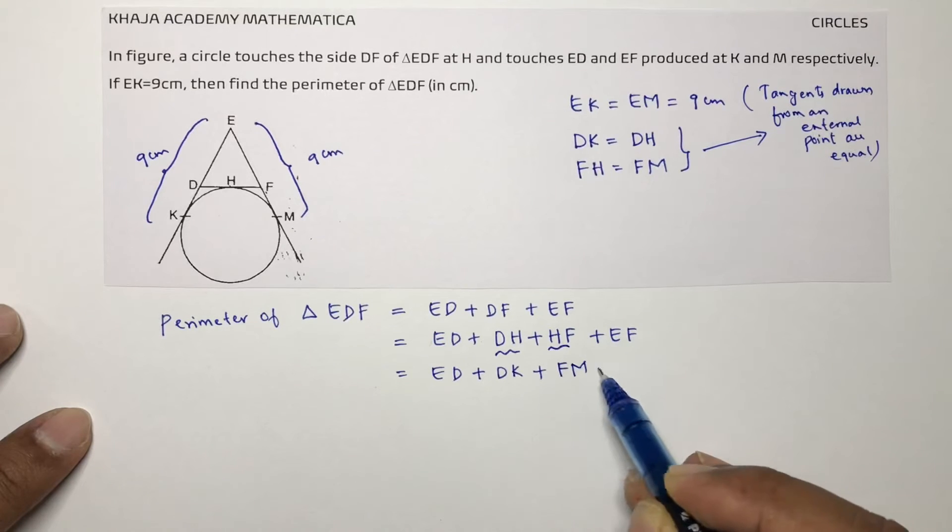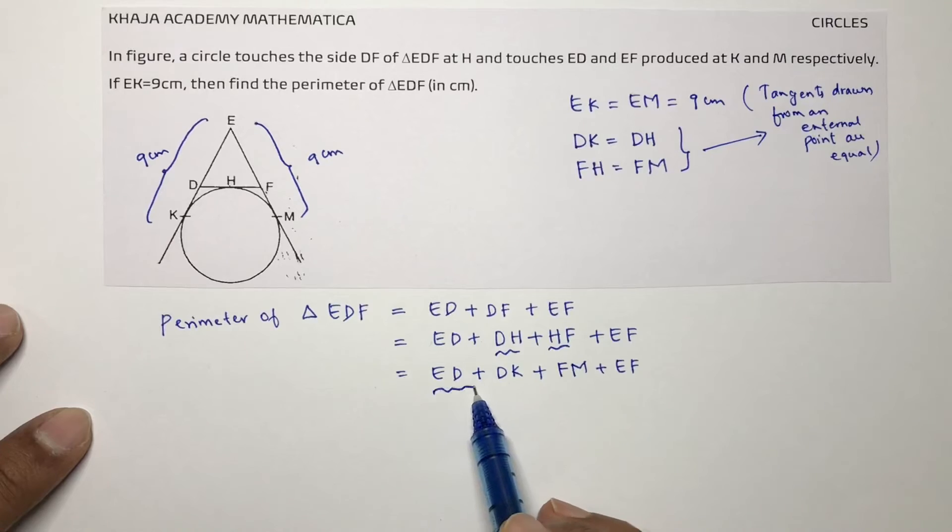If you will replace these both, then look at EF. Now see this in the diagram: ED plus DK, you look up, that's EK.